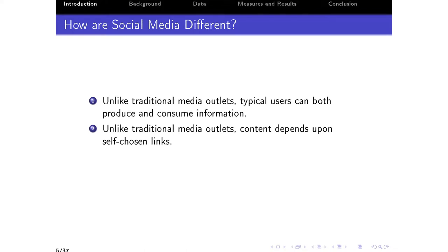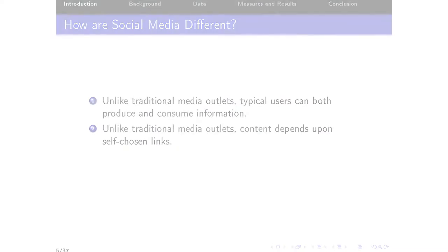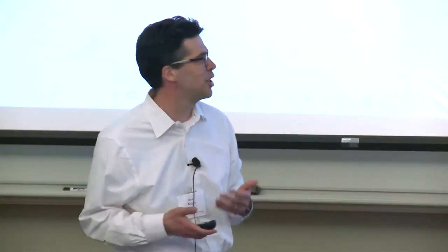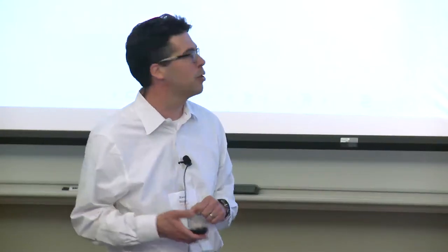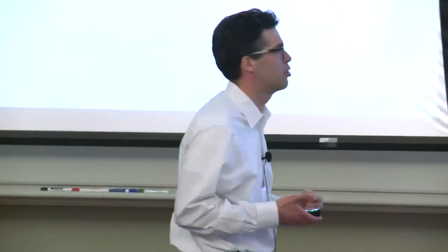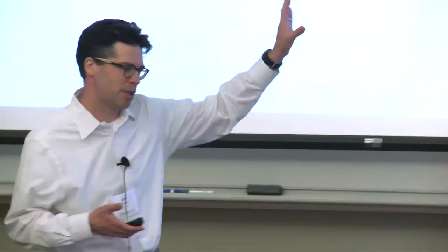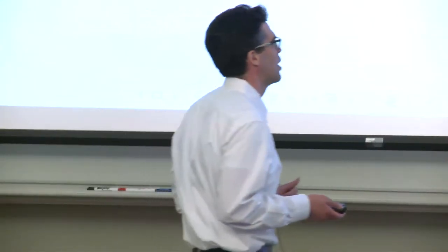Second, unlike traditional media outlets, content depends upon self-chosen links. If a conservative and a liberal both watch CBS Evening News, they're seeing the same content. But two different users on Twitter may experience very different content depending upon what they choose to follow. Of course, people could choose to watch different television news programs as well, so that issue exists there too.